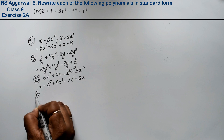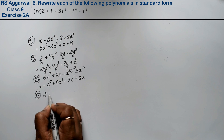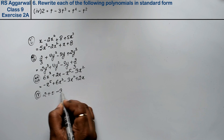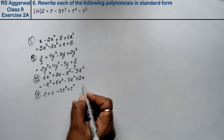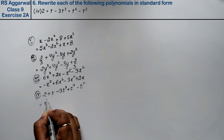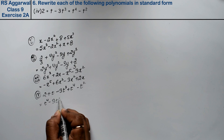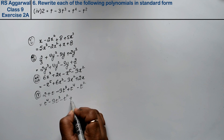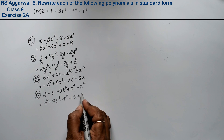Let's do the fourth part. Fourth part is: 2 plus t minus 3t cube plus t to the power 4 minus t square. In standard form the answer is: t to the power 4 minus 3t cube minus t square plus t plus 2.